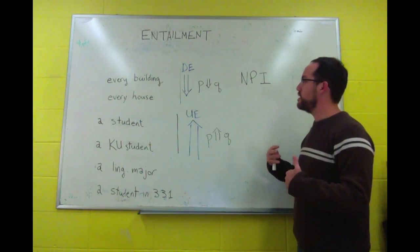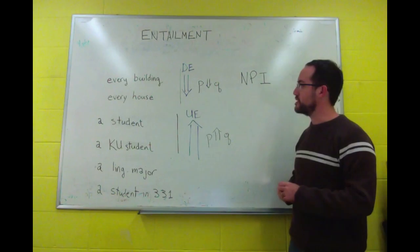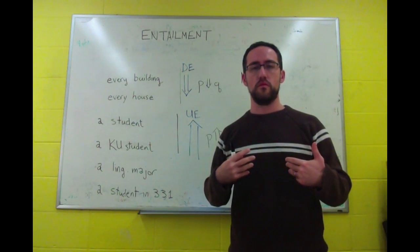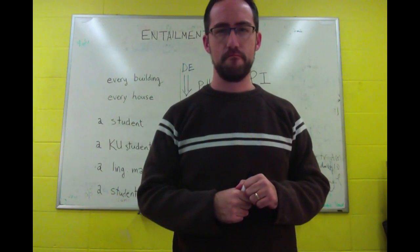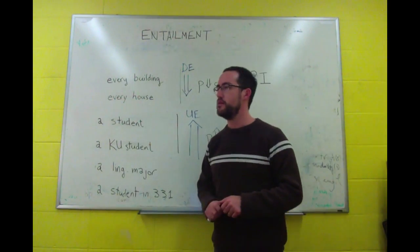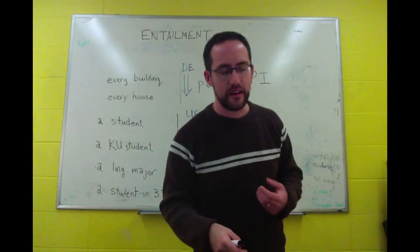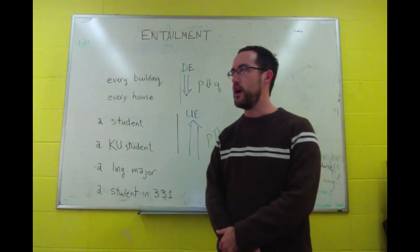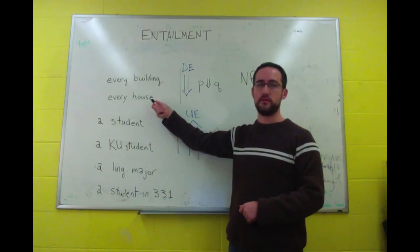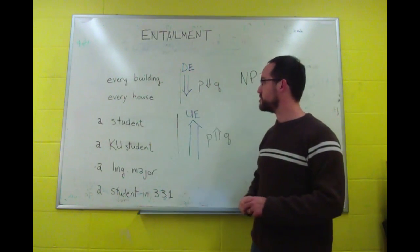And then, another downward entailing context is a question. So we haven't talked about the meanings of questions, but essentially it's downward entailing. A question is downward entailing. If a question covers buildings, it will also cover a house. That is to say, any answer to this question will include, possibly, an answer to this one.